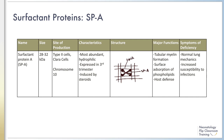Surfactant protein A is the most abundant of the surfactant proteins. It is hydrophilic in nature and is made by type 2 cells and non-ciliated Clara cells. Clara cells are found in the lining of the terminal and respiratory bronchioles and are involved in numerous lung functions, including secretion of Clara cell secretory protein (CCSP).